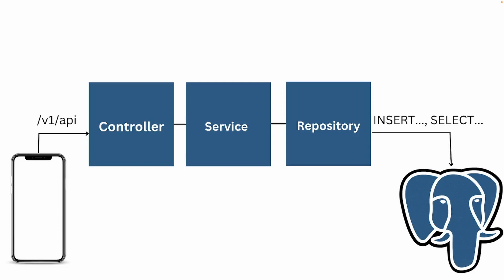The controller doesn't do everything itself — it retrieves the request, but we have a separate structure called the service. The service handles the information retrieved by the controller by doing some validation or structuring the data in a way that it needs to be for the next step.